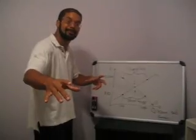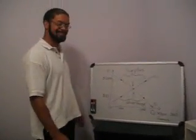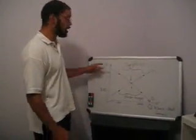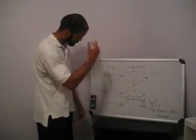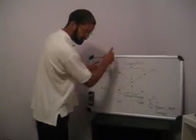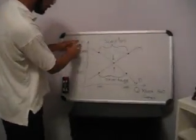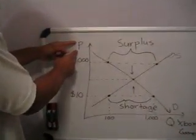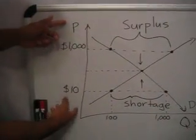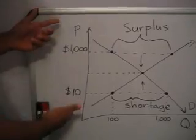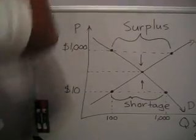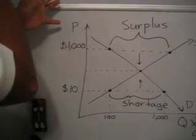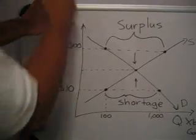Alright, so what we have here - whether you did algebra or not, don't worry about it. The P here stands for price. Right here would be zero, and as you go up, it gets higher. So you got $10 there, $1,000, it goes up. So you have price on one axis.